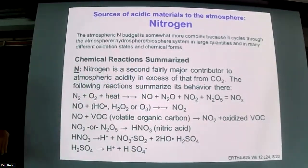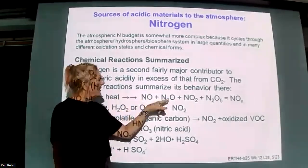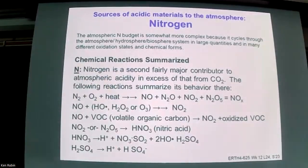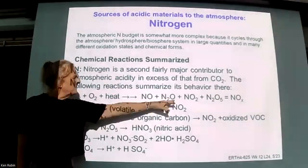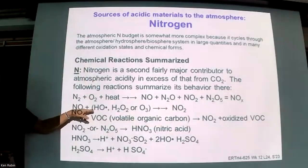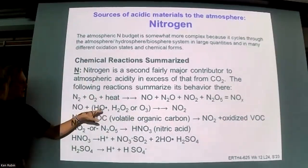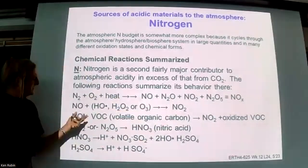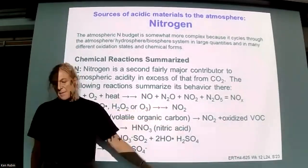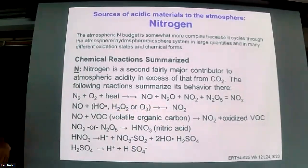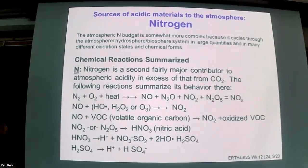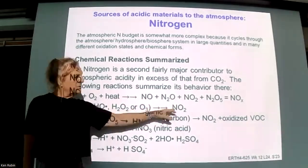When we take any NOx form less than the maximum oxidation state NO2, it reacts with the same three oxidants as sulfur — hydroxyl radicals, hydrogen peroxide, or ozone — to make NO2. For instance, NO reacts to make NO2, and the same applies to the other forms, with slightly different stoichiometry but the same ultimate fate through multiple steps.